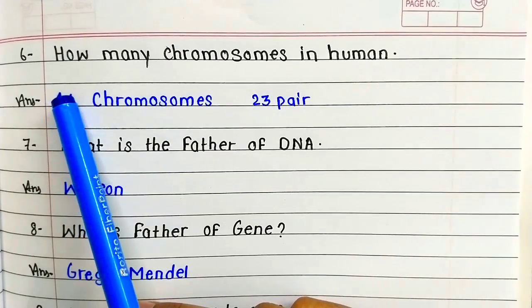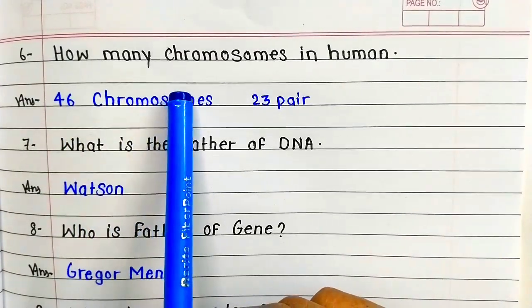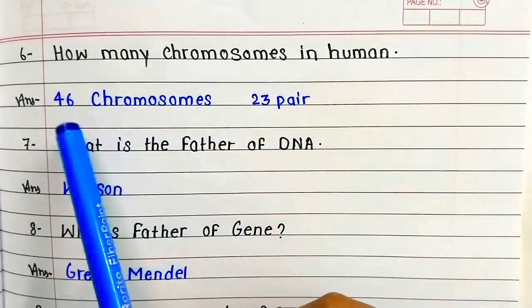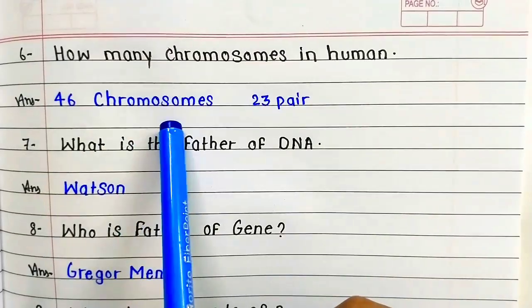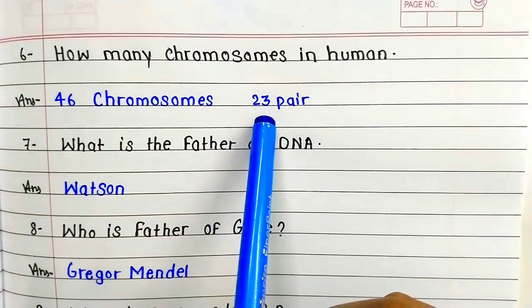Question number 6: How many chromosomes in humans? 46 chromosomes, 23 pairs.